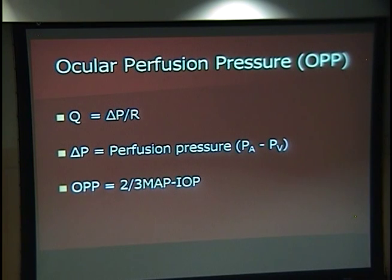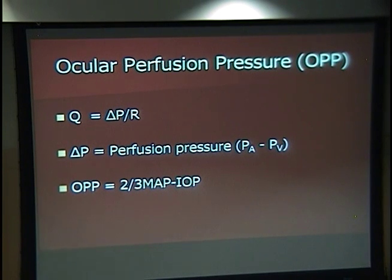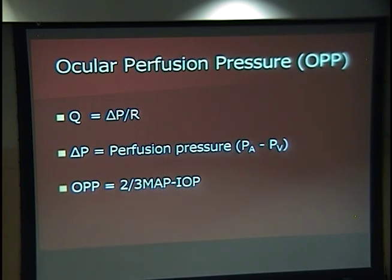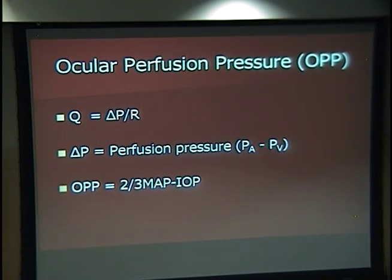So what is ocular perfusion pressure? Going back to blood flow to any organ: flow Q equals the difference in pressure over resistance. Our delta P is also known as the perfusion pressure, and in the most simplistic terms, that's the difference in pressure between the arterial and venous systems. In the eye, you can't directly measure those pressures, so ocular perfusion pressure is measured using mean arterial pressure to estimate arterial pressure in the eye, and IOP to estimate venous pressure. The two-thirds factor accounts for the pressure drop from the brachial artery to the ophthalmic artery, though it's obviously just an estimate. Venous pressure is actually a little higher to allow flow, so IOP is a general estimate.